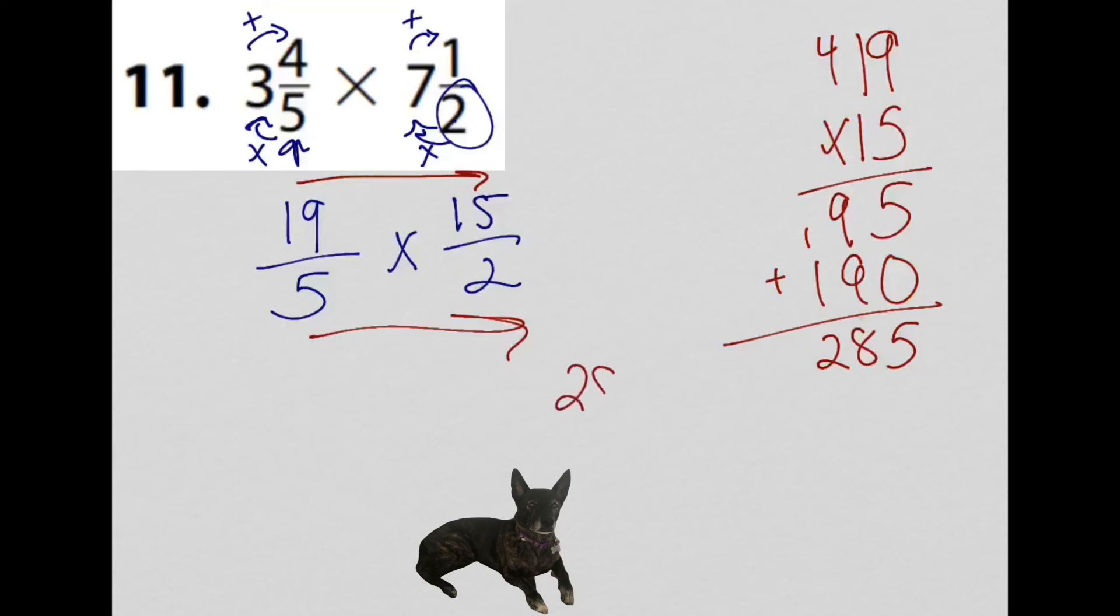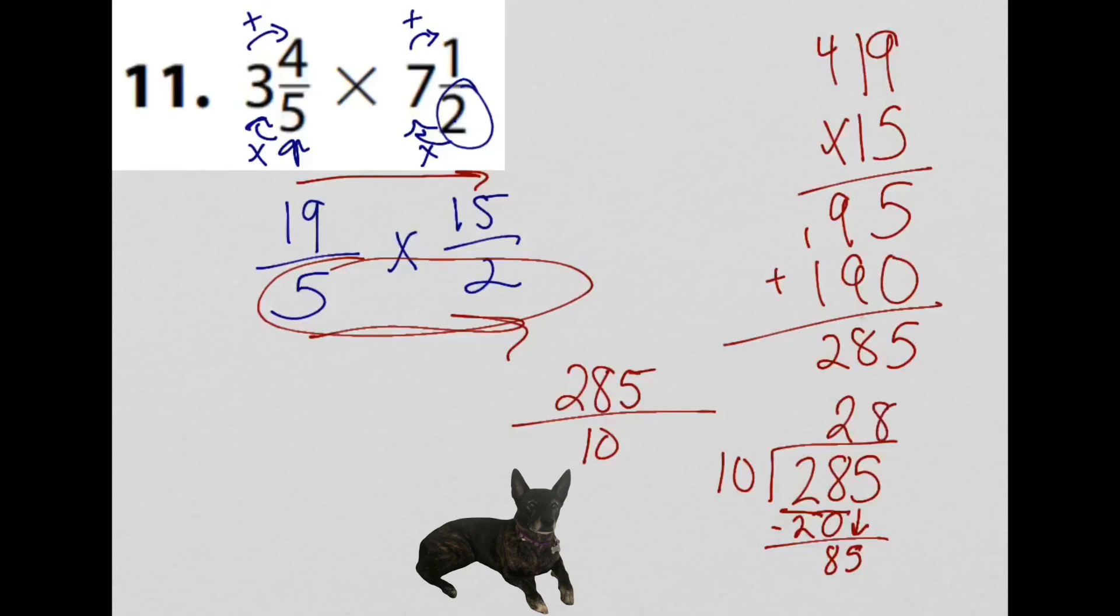So I have 285 with the denominator of 5 times 2 here, which is 10. So now I need to change this back into a mixed number. So I have 285 divided by 10. 10 doesn't go into 2, but 10 goes into 28 two times. 2 times 10 is 20. 28 minus 20 is 8. Now I have 10 into 85. That's 8 times. 8 times 10 is 80, and I have a remainder of 5.